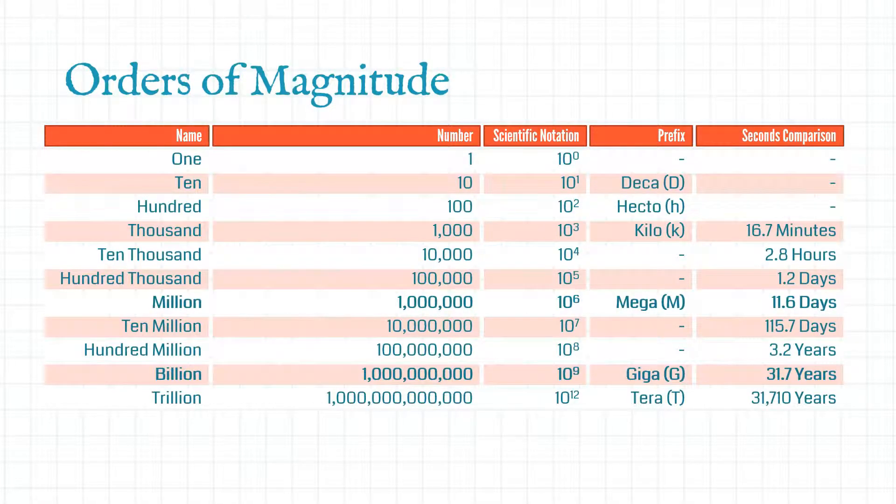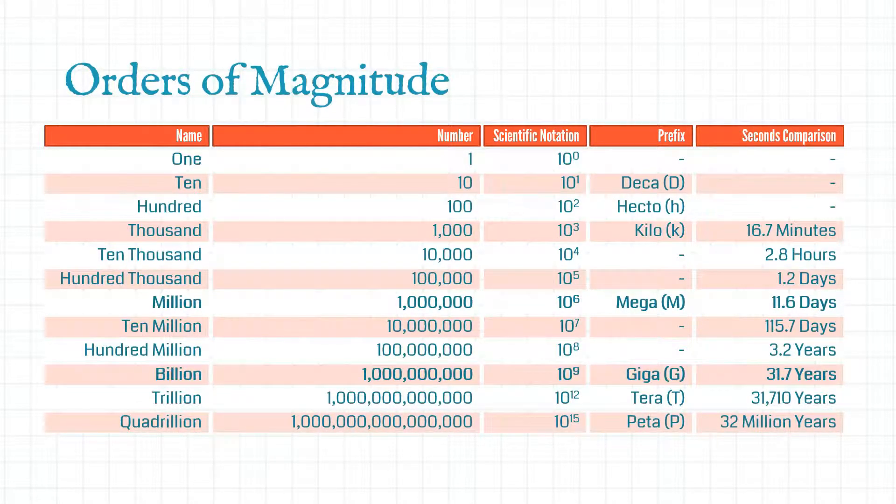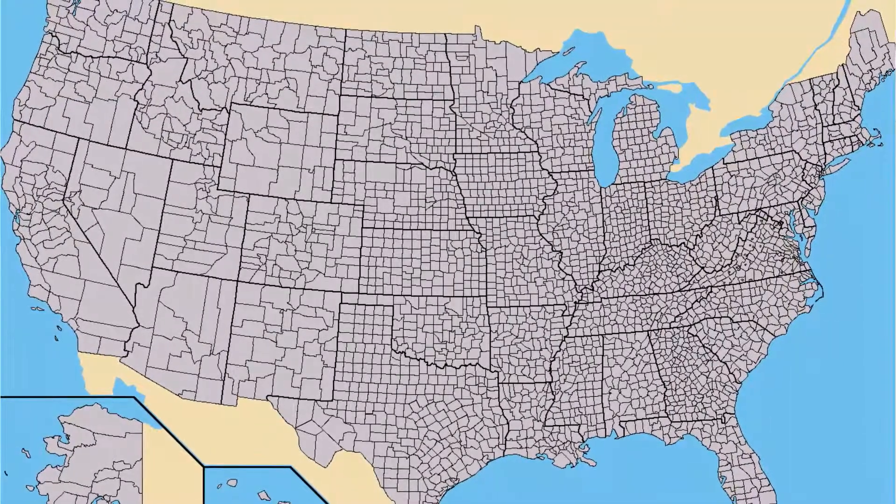From here on we're gonna go up three orders of magnitude at a time. So the next one is a quadrillion, ten to the fifteen, sometimes called a million billion. And a quadrillion seconds is thirty one million years. A quadrillion gallons of water would cover the entire continental United States in one foot seven inches of water.